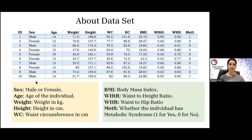I'll show you the dataset in Jamovi. The first column is ID, then gender, age, weight, height, waist circumference, head circumference, BMI, waist-to-height ratio, and waist-hip ratio. The metabolic syndrome column is coded one or zero, where one is present and zero is absent.